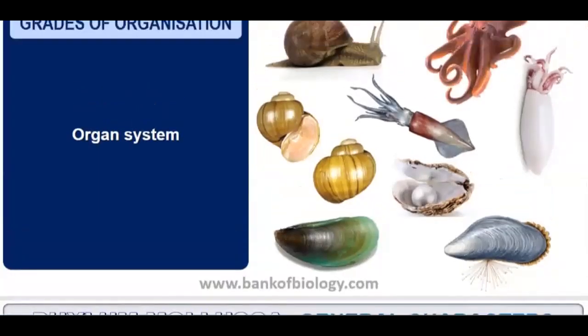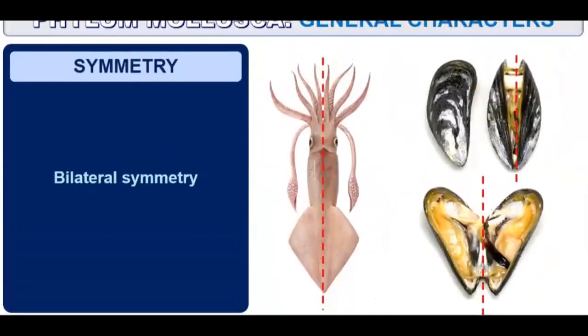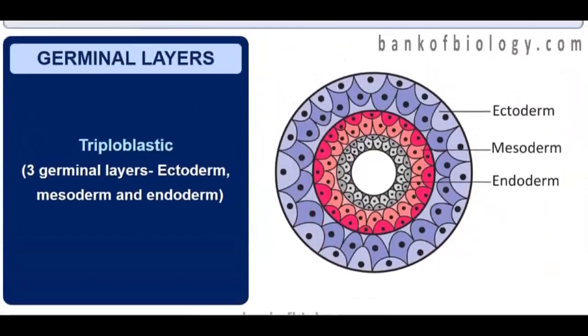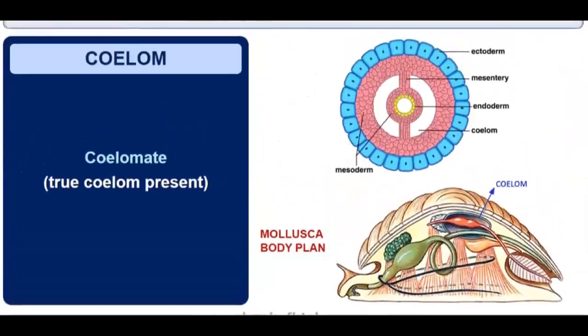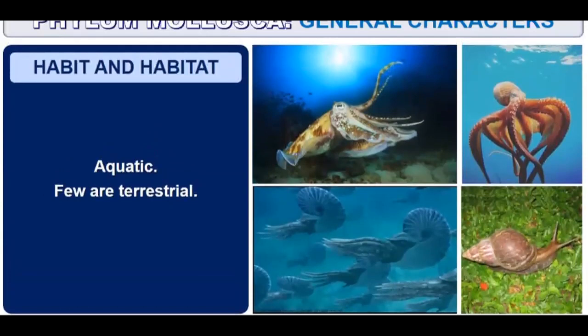Let us come to the general characteristics of Mollusca. Grade of organization: organ system is present. Symmetry is bilateral — we can divide the organisms into two equal parts. The development is triploblastic — three germ layers — making it triploblastic development. Then, coelomate organisms — true coelom is present. Habit and habitat: they are mainly aquatic, though very few are terrestrial. Basically, shells are found in aquatic rivers or seas, but snails can get into the soil.